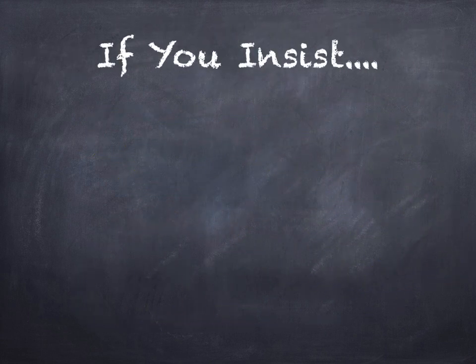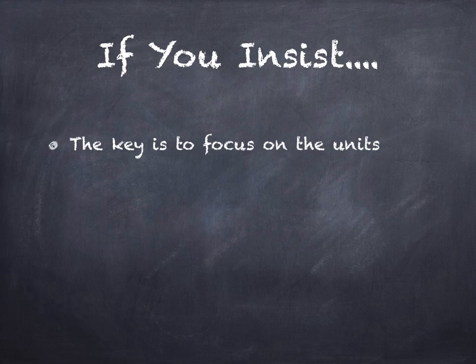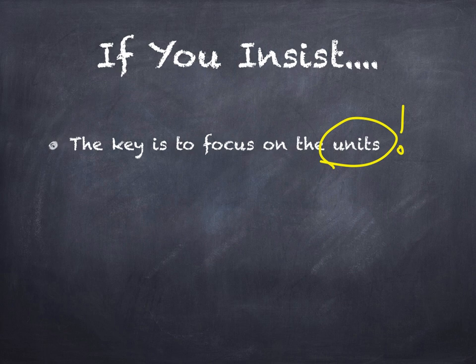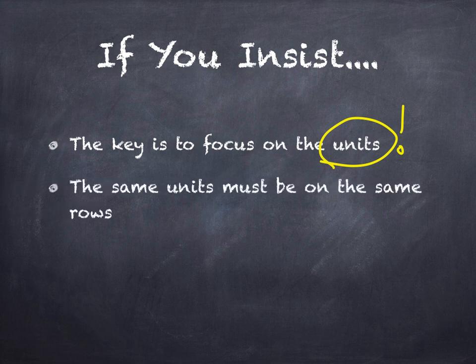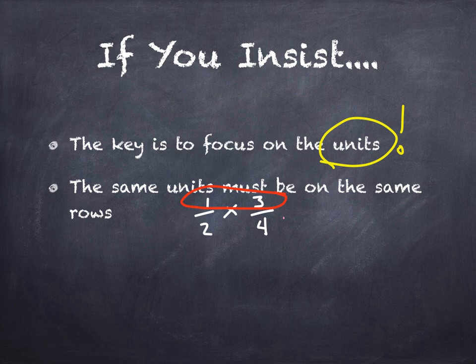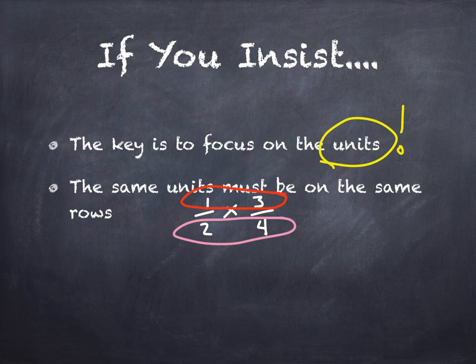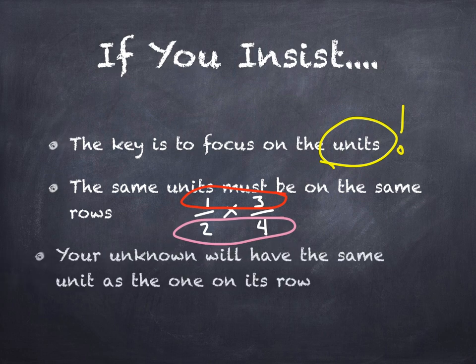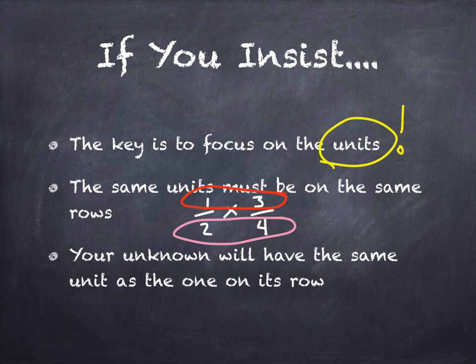So if you insist on pursuing it this way, what I would like you to do is focus on the units as you look at a conversion. The numbers can change and the units are really the key. The thing to focus on is the fact that the same units must be on the same rows. And this would be where if one is to two is three is to four, one and three must have the same unit, and then two and four would have the same unit.